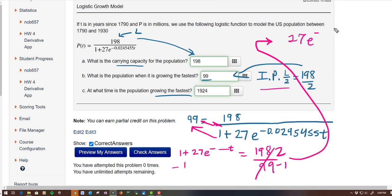So I get 27, E to the blah blah blah, equals one divided by 27.